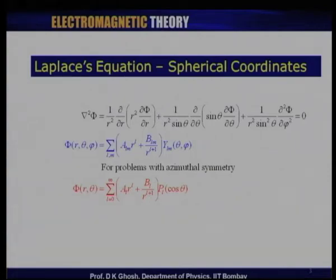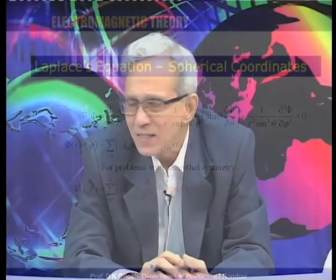What we did is show that this equation can be solved by the separation of variables technique, and the general solution is given in terms of what are known as spherical harmonics. The radial part of the solution has two parts: one part which goes as r to the power l, and a second part which goes as 1 over r to the power l plus 1, where l goes from 0 to infinity. This is the general solution.